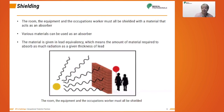Next is shielding. The room, the equipment, and the occupational workers must all be shielded with material that acts as an absorber. The material is given in lead equivalency, which means the amount of material required to absorb as much radiation as a given thickness of lead. Lead is not always the material used, mostly due to cost and weight. The purpose of shielding is to keep dose to ALARA by absorbing radiation. Shielding absorbs most of the scatter but is not the most effective method because it does not cover the entire body of the radiation worker.